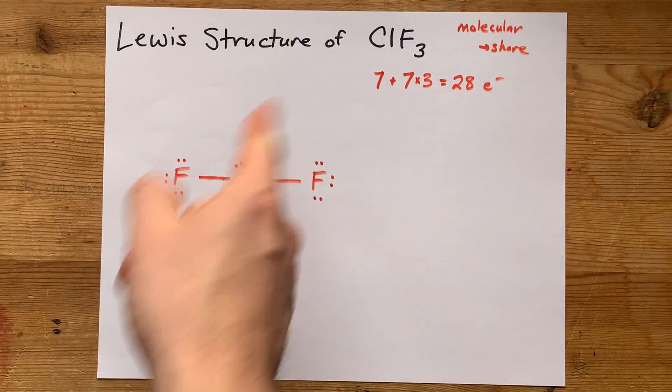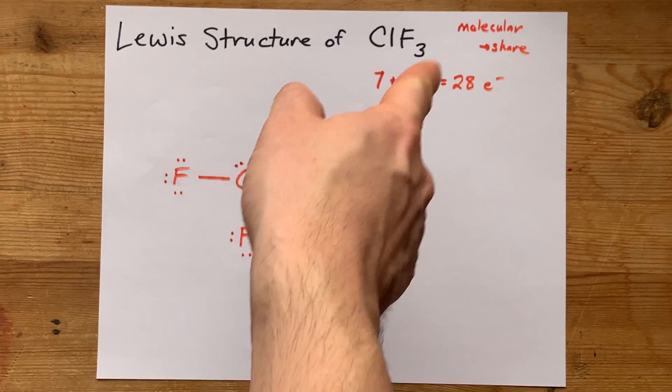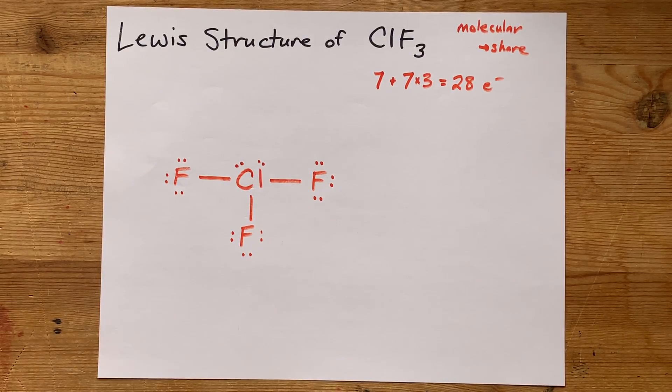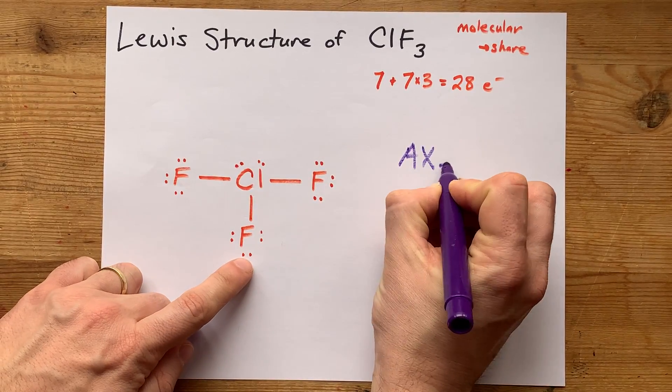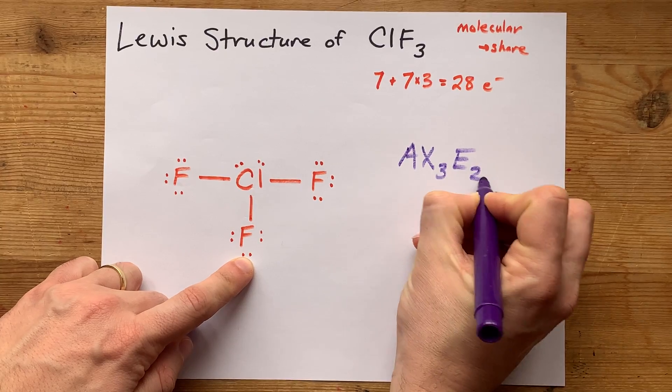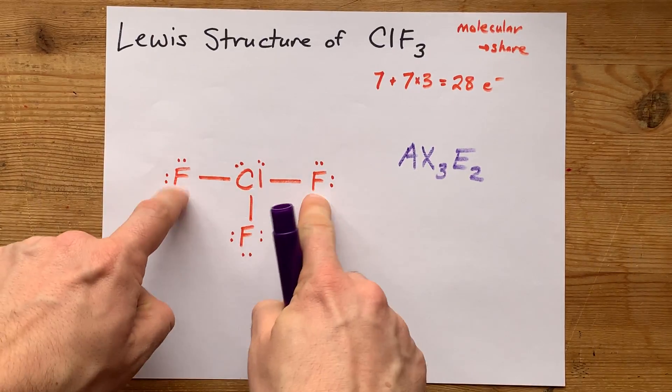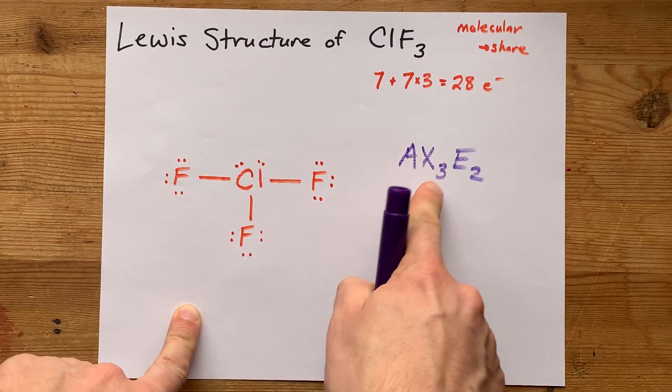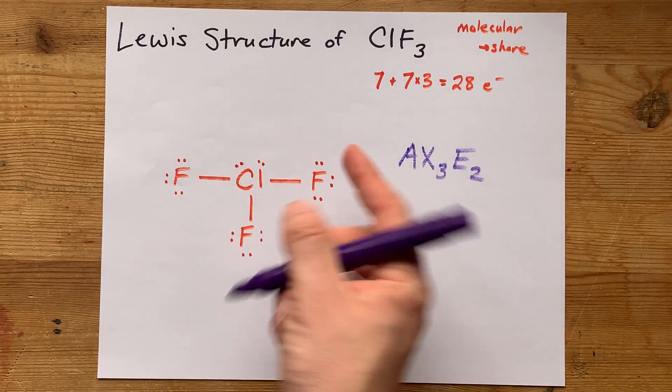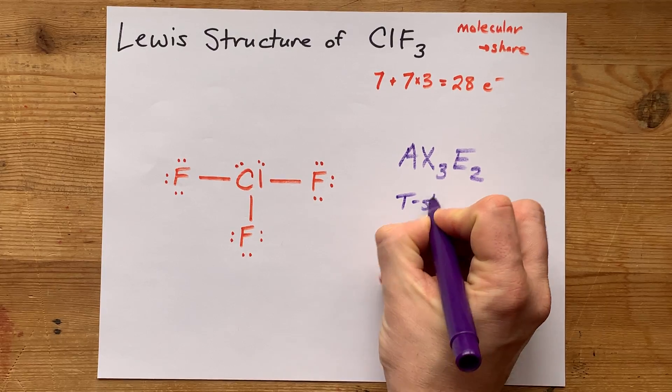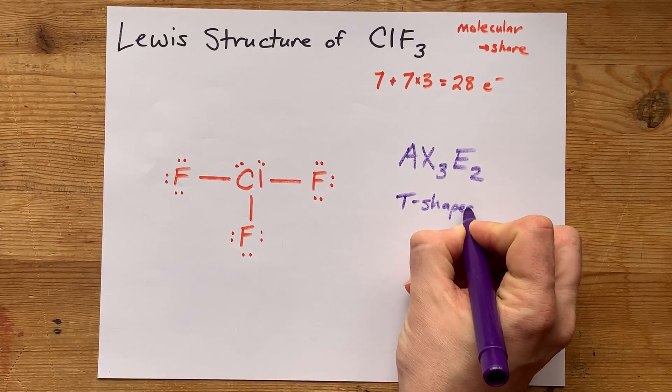Yes, this is the Lewis structure of chlorine trifluoride. And if you're curious, the VSEPR notation for this is AX3E2. That's because you have three atoms bonded to the central and two lone pairs as well. The shape of this used to be called T-shaped, as far as I remember.